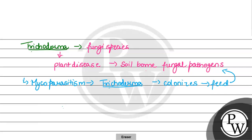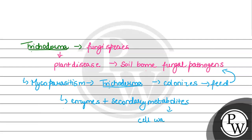Apart from this, Trichoderma also produces enzymes and secondary metabolites. This helps in degradation of the cell wall — specifically the cell wall of pathogenic fungi. So it degrades the cell wall of pathogenic fungi, which is very harmful to their survival.